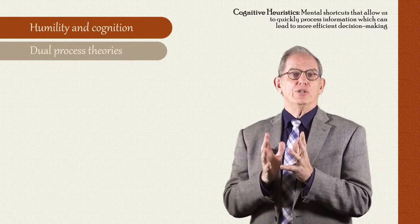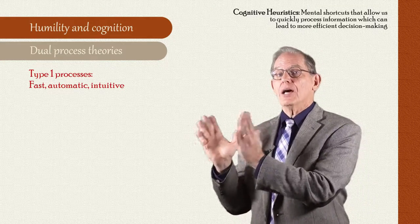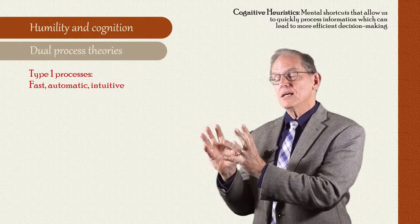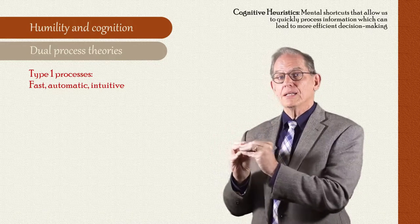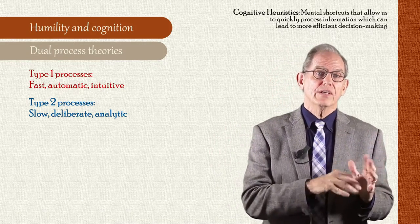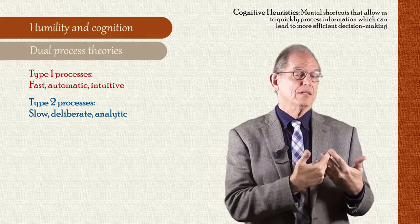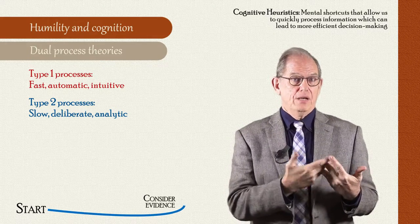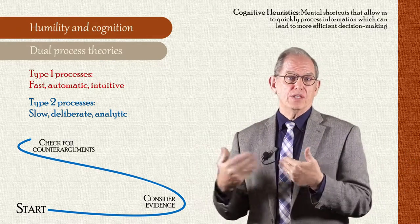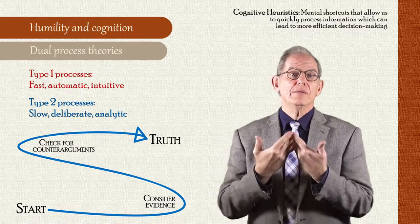These theories broadly share a distinction between fast, automatic, and intuitive processes—called Type 1 processes—and slow, deliberative, and analytic processes—known as Type 2 processes. Research into Type 1 and Type 2 thinking is both relevant and impactful for the study of intellectual humility.